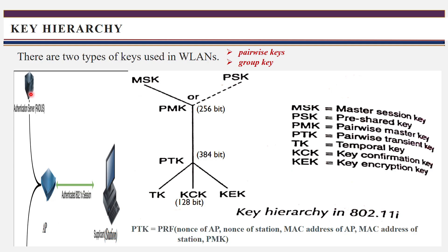After that, these two agree to use this master session key for further communication. The authentication server will communicate with the access point and inform that they agreed to use this master session key to communicate with the station. Then the access point communicates with the station using the master session key, and the access point and station will derive a new key — the PMK, that is the pairwise master key.